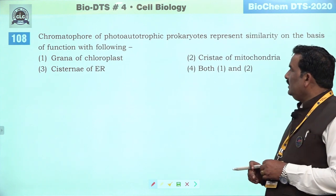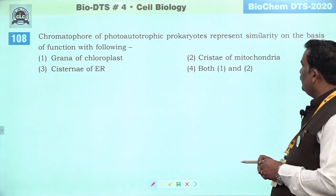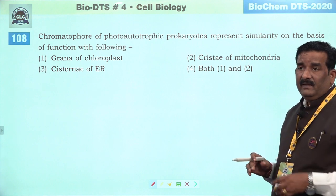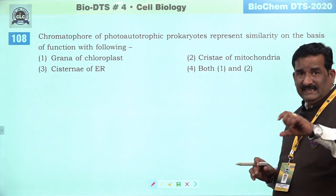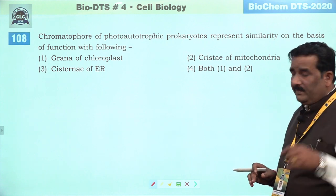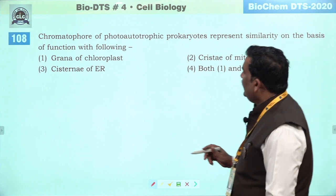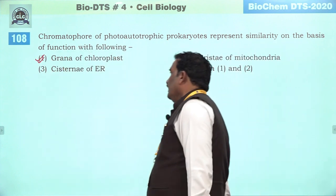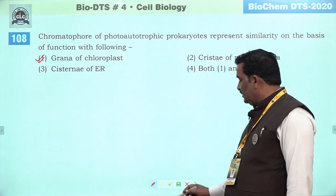Next question: chromatophore — yeh achha question hai, NCRT based hai. Chromatophore and photosynthetic prokaryotes — BGA, cyanobacteria hain, inمیں chromatophore paaye jaate hain — single membranous structure hai jahan par light ke pigments paaye jaate hain jo light reaction ko show karte hain. Chloroplast mein yeh grana se resemblance ho karte hain. First is the right answer.